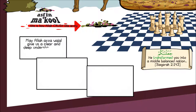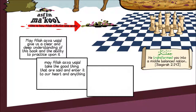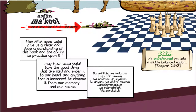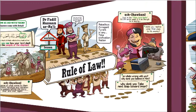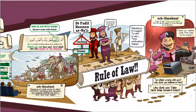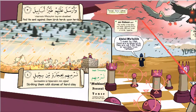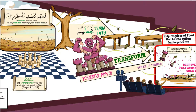May Allah عز و جل give us a clear and deep understanding of this book and the ability to practice upon it. May Allah take the good things that are said and enter them into our hearts, and anything that is incorrect, may He remove it from our memories and our hearts. بَارَكَ اللَّهُ لِي وَلَكُمْ فِي قُرْآنِ الْحَكِيمِ وَنَفَعْنِي وَإِيَّاكُمْ بِالْآيَاتِ وَالذِّكْرِ الْحَكِيمِ، وَالسَّلَامُ عَلَيْكُمْ وَرَحْمَةُ اللَّهِ وَبَرَكَاتُهُ. أَعُوذُ بِاللَّهِ مِنَ الشَّيْطَانِ الرَّجِيمِ، بِسْمِ اللَّهِ الرَّحْمَنِ الرَّحِيمِ. أَلَمْ تَرَ كَيْفَ فَعَلَ رَبُّكَ بِأَصْحَابِ الْفِيلِ، أَلَمْ يَجْعَلْ كَيْدَهُمْ فِي تَضْلِيلٍ، وَأَرْسَلَ عَلَيْهِمْ طَيْرًا أَبَابِيلَ، تَرْمِيهِمْ بِحِجَارَةٍ مِّنْ سِجِّيلٍ، فَجَعَلَهُمْ كَعَصْفٍ مَأْكُولٍ.